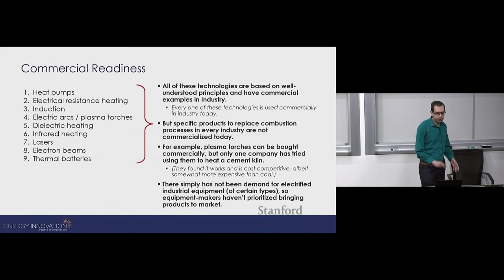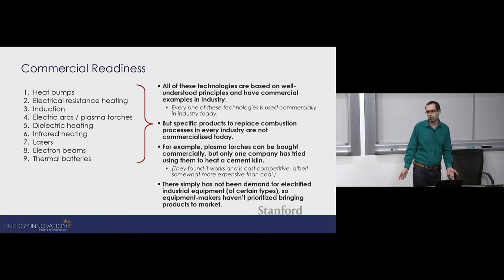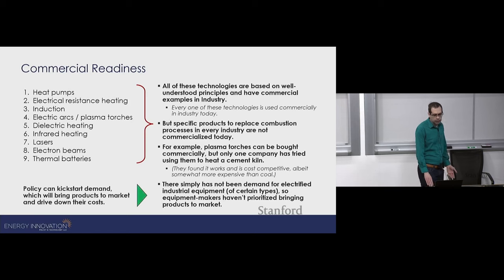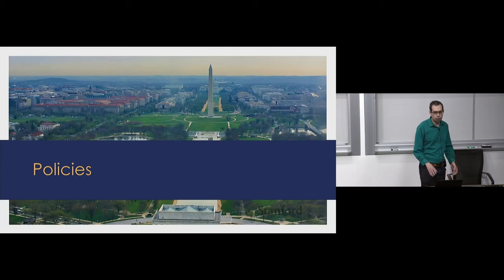All of these technologies are based on understood scientific and engineering principles. The real challenge is commercial application — there just hasn't been demand for electrified versions of some types of industrial equipment, like electrified cement kilns. Policy can help overcome this chicken-and-egg problem and kickstart demand: equipment becomes available, then there's clean production and more demand for clean products and more demand for the equipment. That brings us to the policy section of the talk.